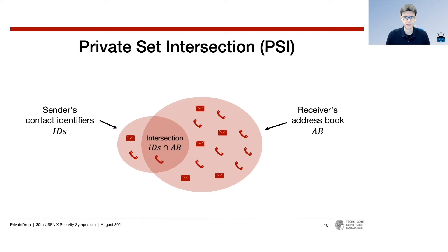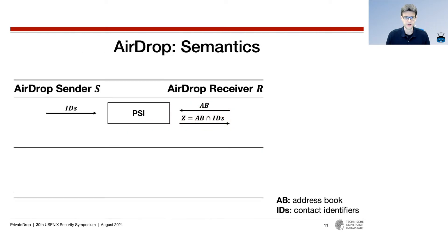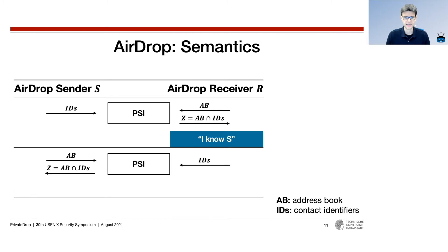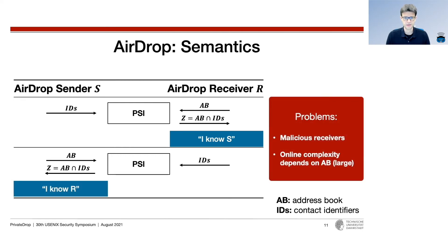A straightforward application of PSI for AirDrop could work as follows: in the first step, the sender inputs their IDs and the receiver inputs the address book, so the receiver can say 'I know the sender' or abort. Then we run PSI with roles reversed so the sender can say 'I know the receiver' or abort. However, there are two issues. First, a malicious receiver may not abort even if the intersection was empty, and can fool the sender by using widely popular phone numbers — such as an emergency number the sender likely has stored. The second problem is that the online computation complexity depends mainly on the size of the address book, which is usually much larger than the set of own contact identifiers.